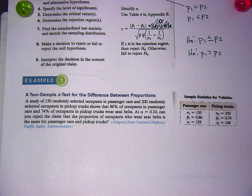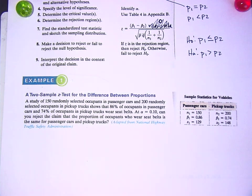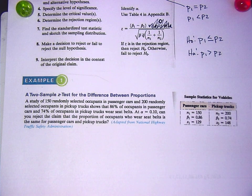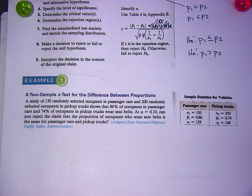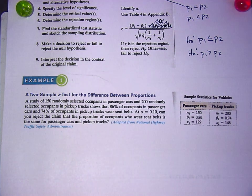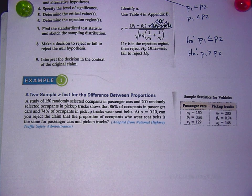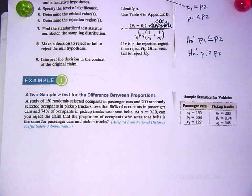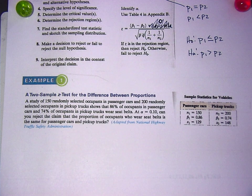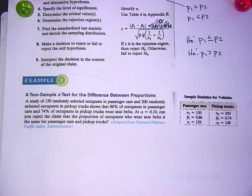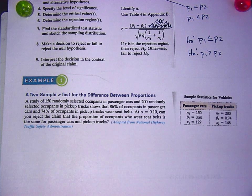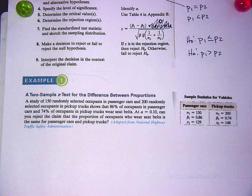Okay, we're just going to give this a shot. A study of 150 randomly selected occupants in passenger cars and 200 randomly selected occupants in pickup trucks show that 86% of occupants in passenger cars and 74% of occupants in pickup trucks wear safety belts. At 10%, can you reject the claim that the proportion of occupants who wear seat belts is the same for passenger cars in pickup trucks? That's an interesting question, isn't it? Like, you can actually say stuff like that and prove it with stats. It seems like from my experience that if you've got a pickup truck, you're not wearing your safety belt a lot. Is that a significant difference between the two? And then we can test it.